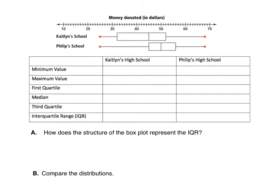Let's start with Kaitlyn's high school. For the minimum value — that's the leftmost whisker — Kaitlyn's high school has a min of 25. The maximum, the rightmost whisker, is at 68. The first quartile is the left edge of the box, at 32. The median is the line through the box, at 45. The third quartile is the right edge of the box, at 52. The interquartile range, or IQR, is Q3 minus Q1: 52 minus 32 equals 20.